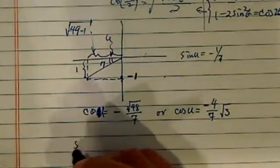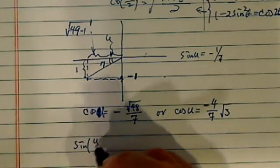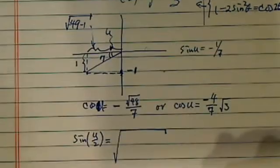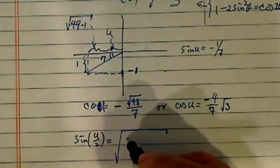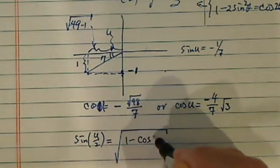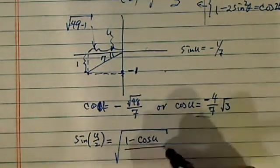Sine of u over 2 equals the square root of (1 minus cosine u) over 2, which we found already.